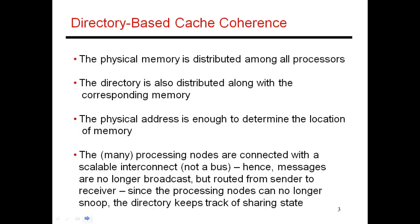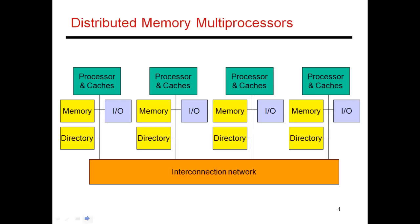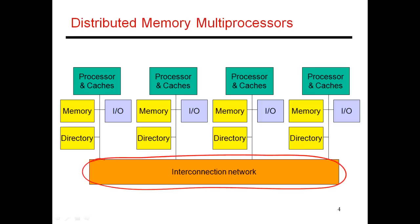Let me explain what our basic architecture is. There are two main steps being taken to improve scalability. First, I'm not using a bus. Instead, I'm using a scalable network. My network could represent a mesh — I have several nodes laid out in a two-dimensional array with connections between north, south, east, and west neighbors. So when I'm sending a message from A to B, that message is not seen by everyone; it is only seen by the intermediate routers between nodes A and B.